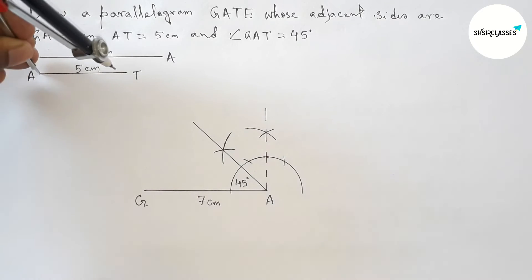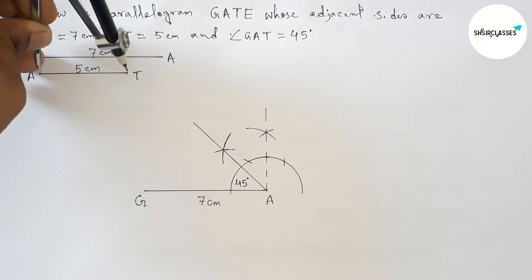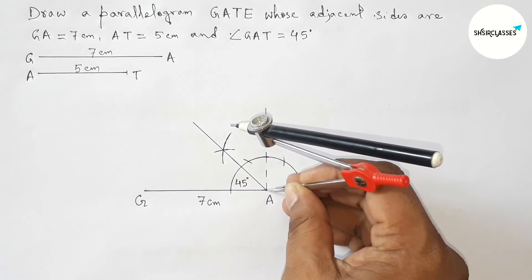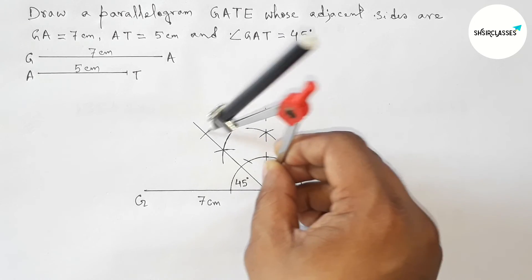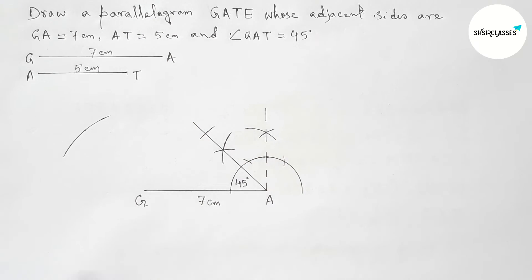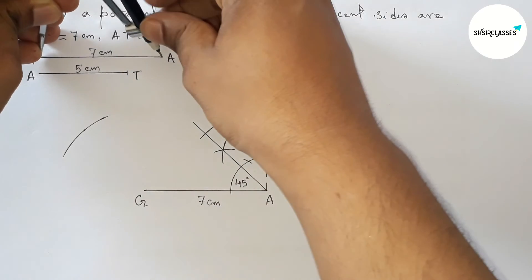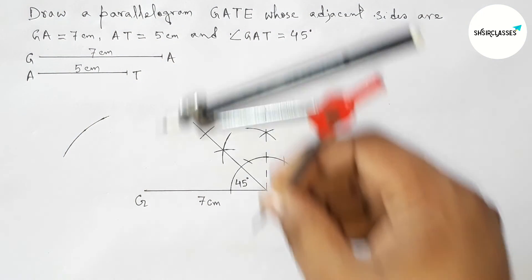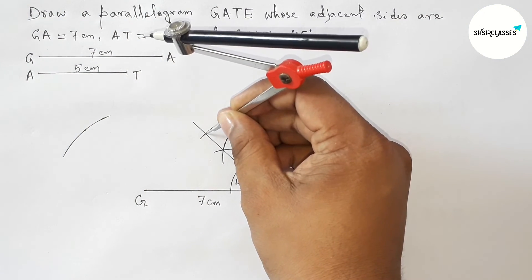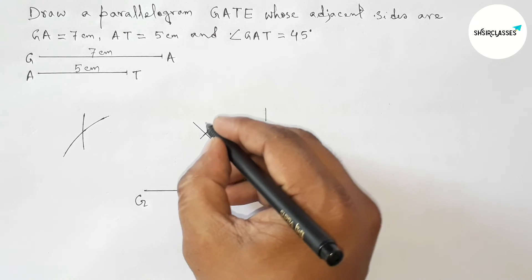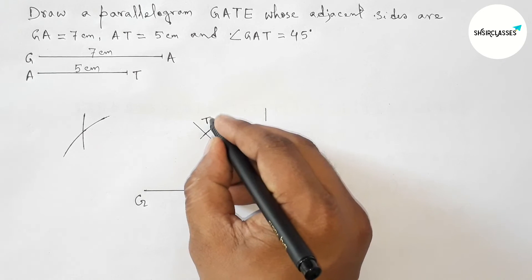Now taking 5 centimeter length with the help of the compass. Putting the compass on point A and cutting here, then cutting again with the same length. Putting the compass on point G and cutting here. Now taking length 7 centimeter, putting the compass on the point and cutting here.